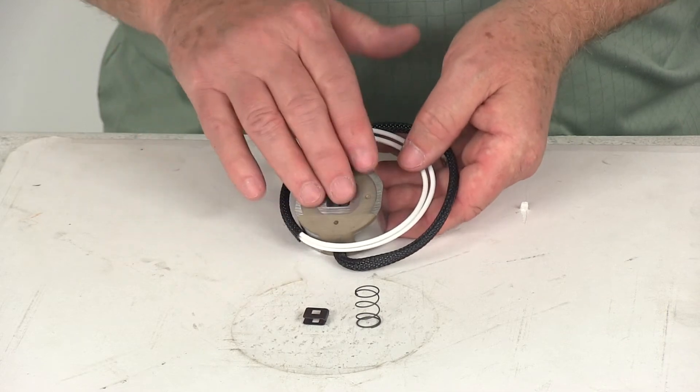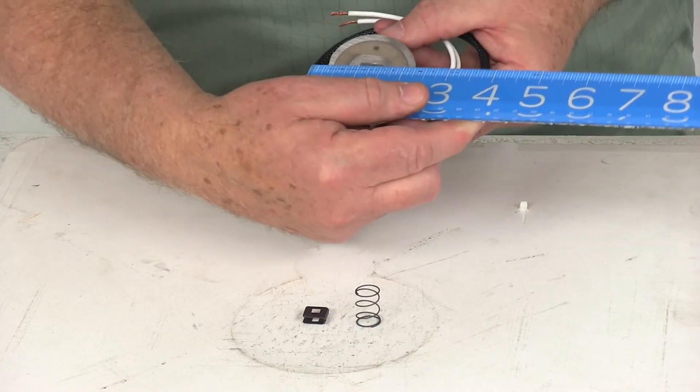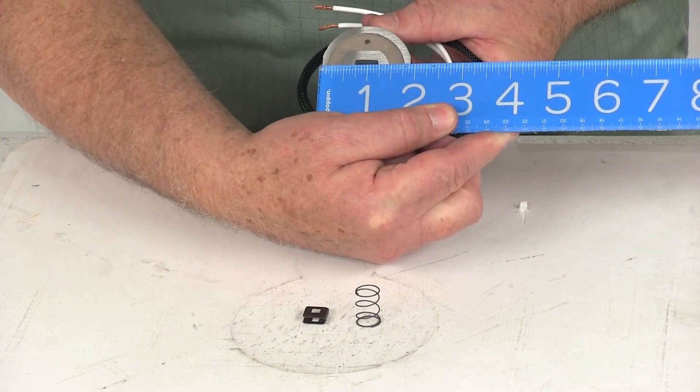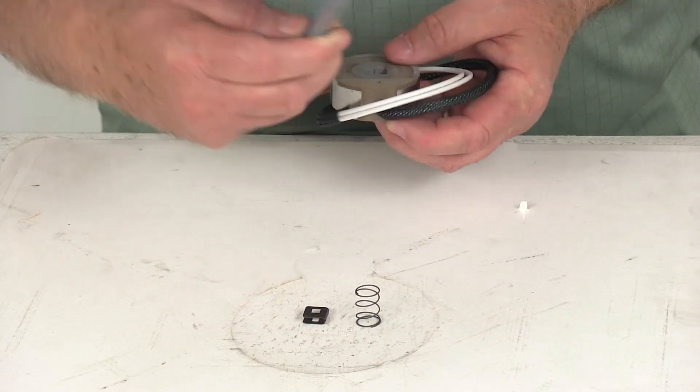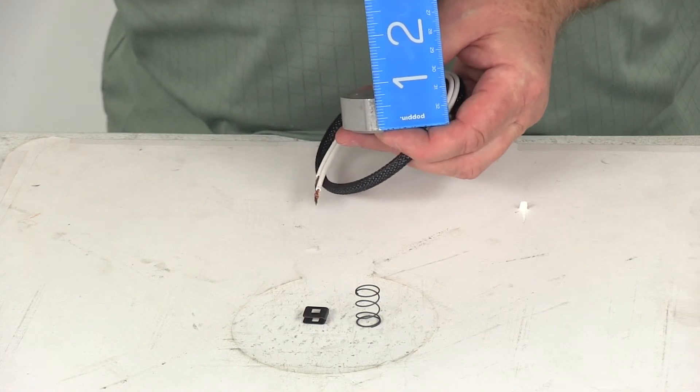This part includes the magnet, the spring, and the retainer clip. Dimension on the magnet itself, it's a round magnet so the diameter is right at 1-7/8 inches, and the overall height on it is right at 3/4 of an inch tall.